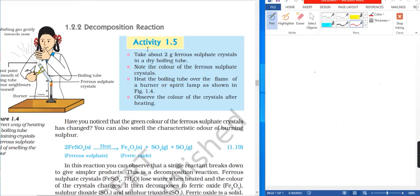Decomposition reaction. Activity 1.5. Take about 2g of ferrous sulphate crystals in a dry boiling tube. Note the color of the ferrous sulphate crystals.